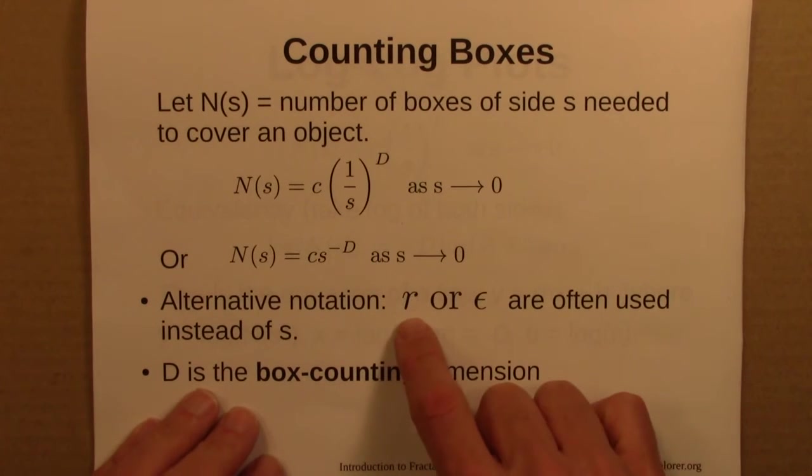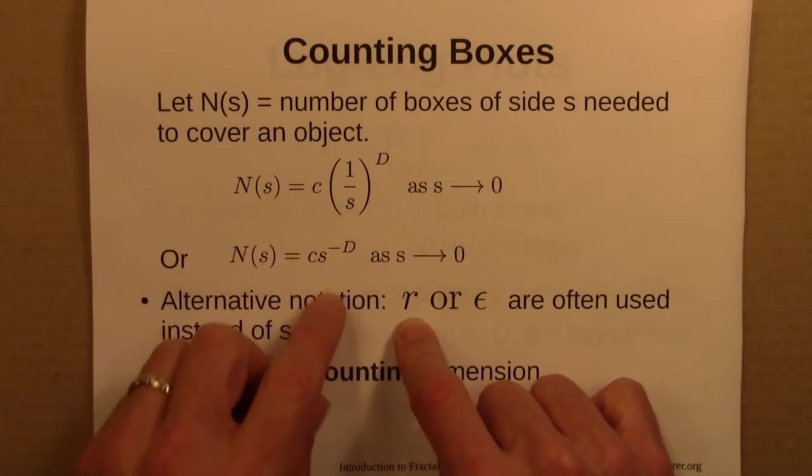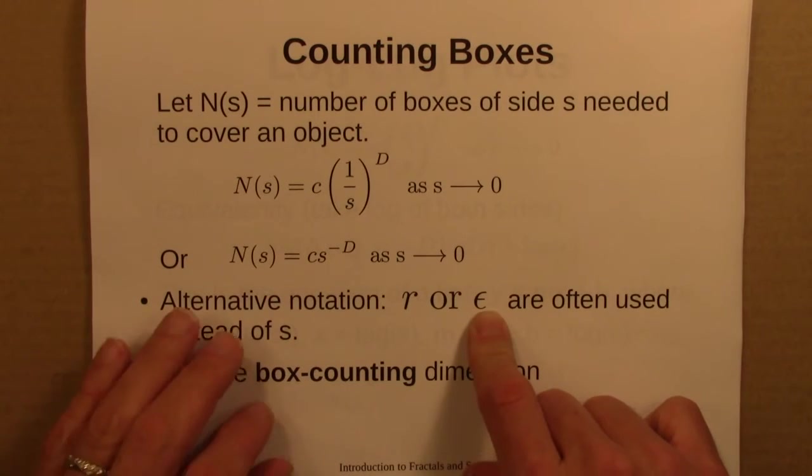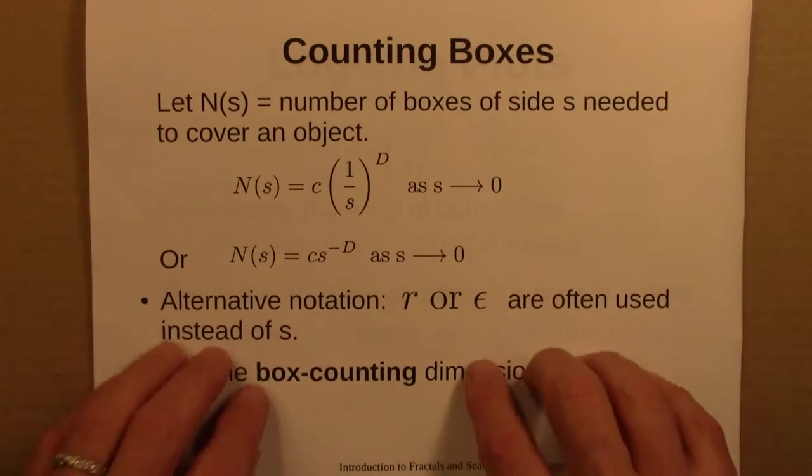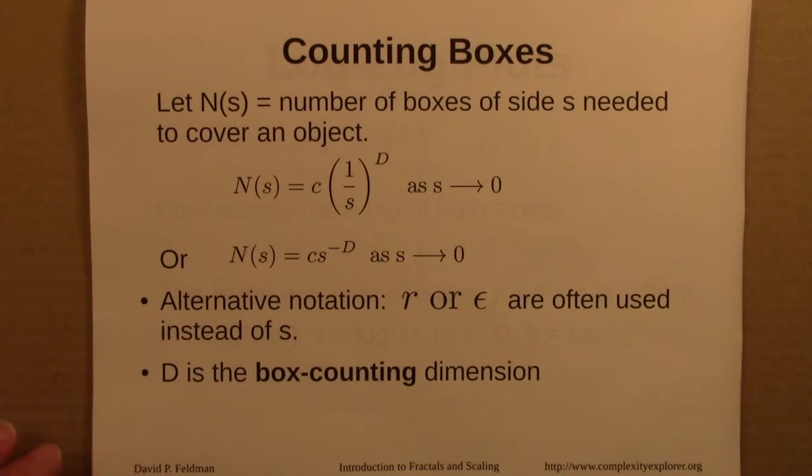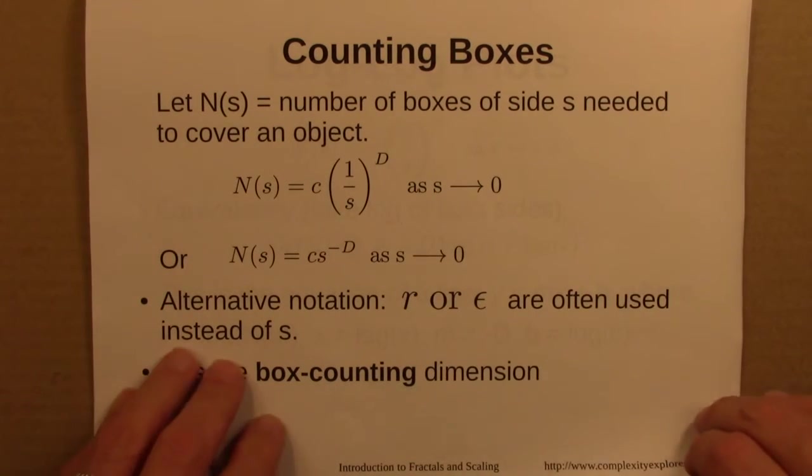Also, some authors use r instead of s. I like using s for side. And some also use epsilon. Epsilon is often used in mathematics for quantities that get really small. All three of these notations, s, r, and epsilon, are very common. In any event, d in this equation is known as the box counting dimension.